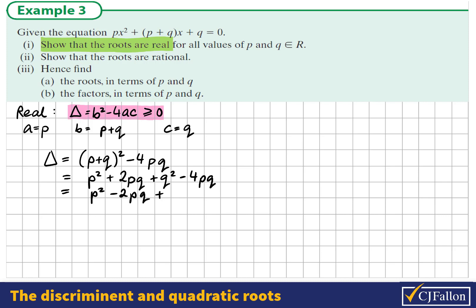Now, you should on this course recognize that p² - 2pq + q² is a perfect square. It is (p - q) multiplied by (p - q).